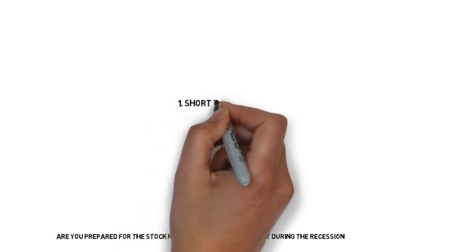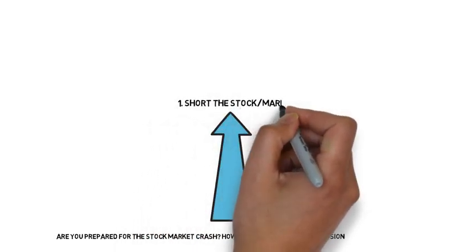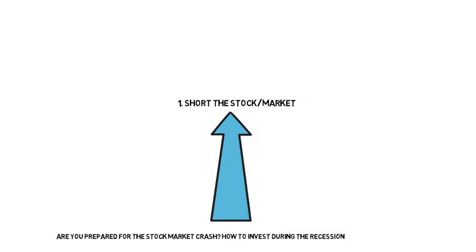Tip number one is to start looking for points in the market where you can short the stock. For those of you who just started out investing and trading and are not so sure about what shorting is, shorting is the opposite of buying a stock. Instead of looking for positions to buy, you are looking for entries to short the stock.